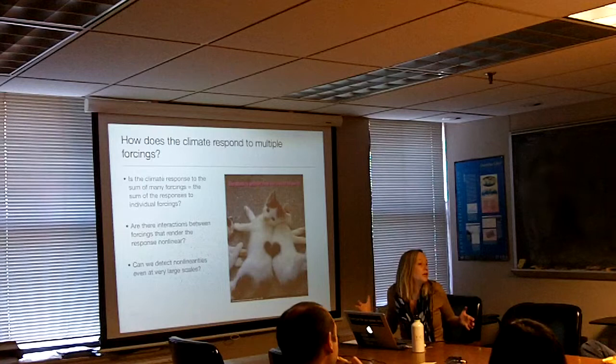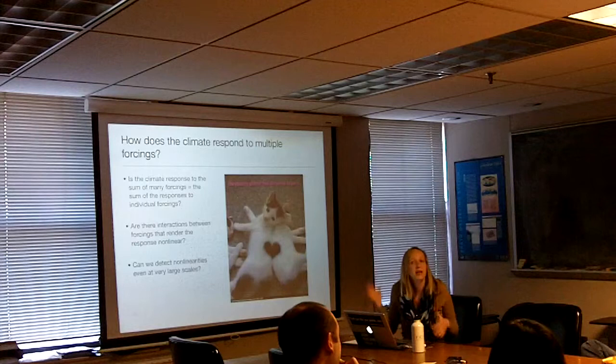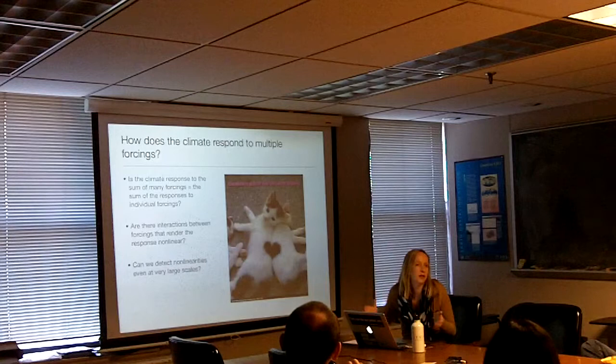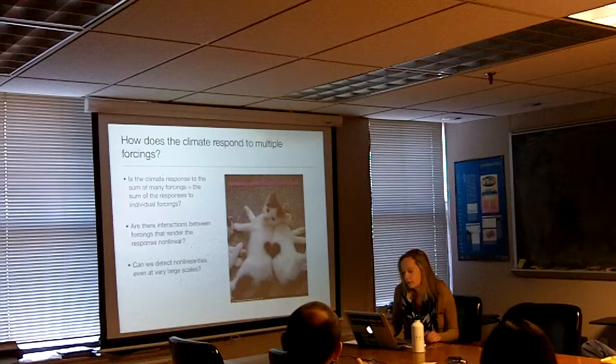There have been a couple of studies that say if you're looking at really big scales — global scales, even continental or regional scales — and you're looking in the historical period, everything looks basically linear. If you look at smaller regional scales, you start getting non-linearities, especially in the future in some of the RCPs. But consensus seems to be that everything looks pretty linear in the historical period at big scales.